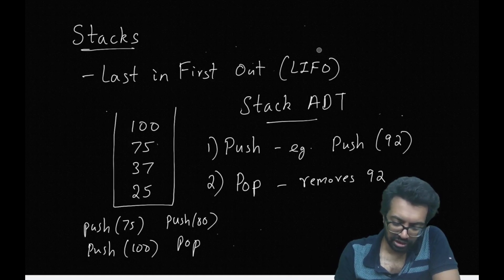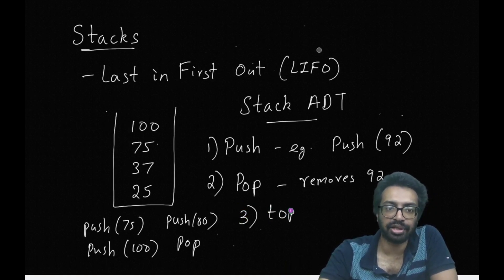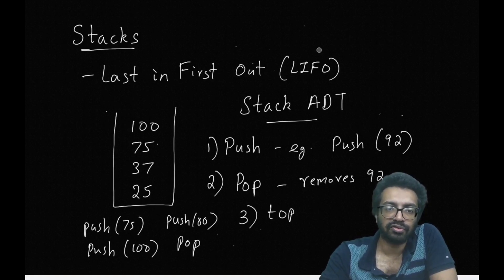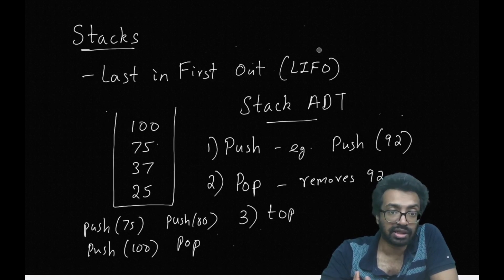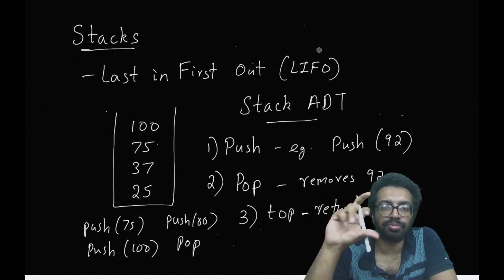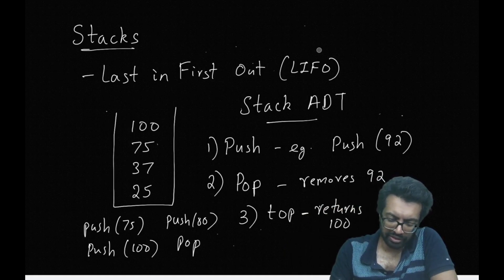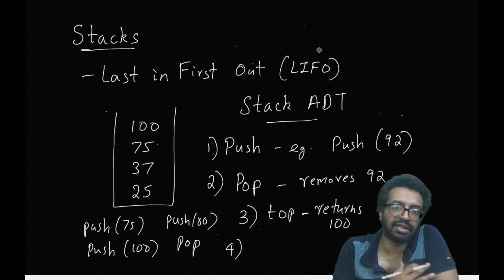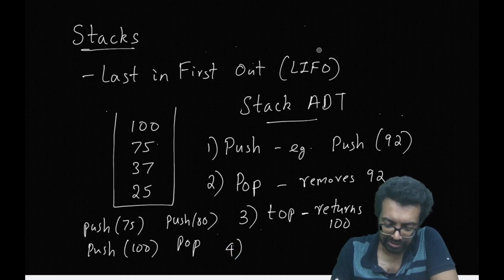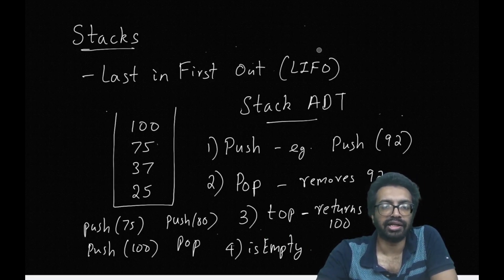The third function is the top function. The top function tells me what is at the top of the stack — basically, which element will be removed if I use pop next. In this example, top is going to return 100, because that is the topmost element. Top always returns the element which will be popped next. Finally, we have a function which just checks whether the stack is empty or not. These are some typical functions which a stack ADT provides to a user.